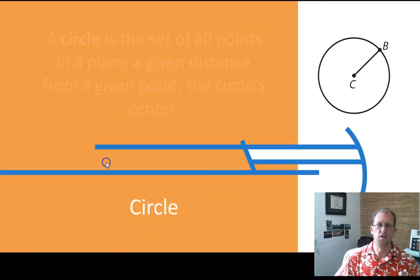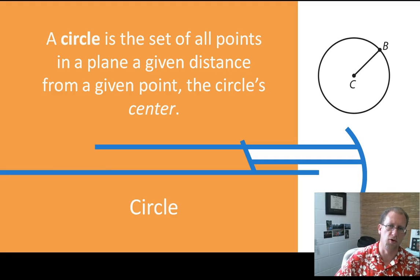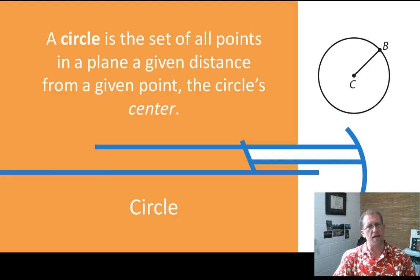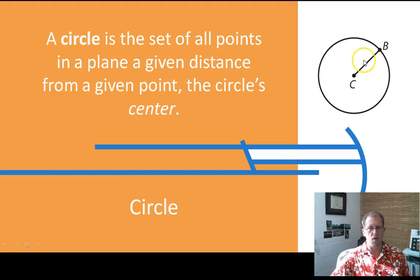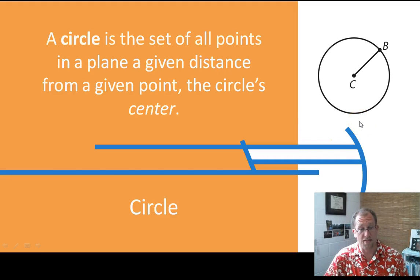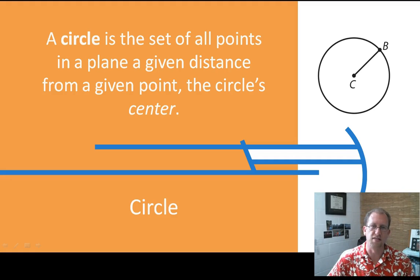We're going to be talking also about specific closed simple curves called circles. A circle is one way to get a closed simple curve, and a circle is the set of all points in a plane a given distance from a given point, which is the circle's center. So this is the center of the circle. This would be the radius, and we'll get to that definition on the next slide. But the distance from C to B is swung around where C is the center of rotation, and all the points on the circle are the same distance from C. So C is the center of the circle, and it represents all the points a given distance away.